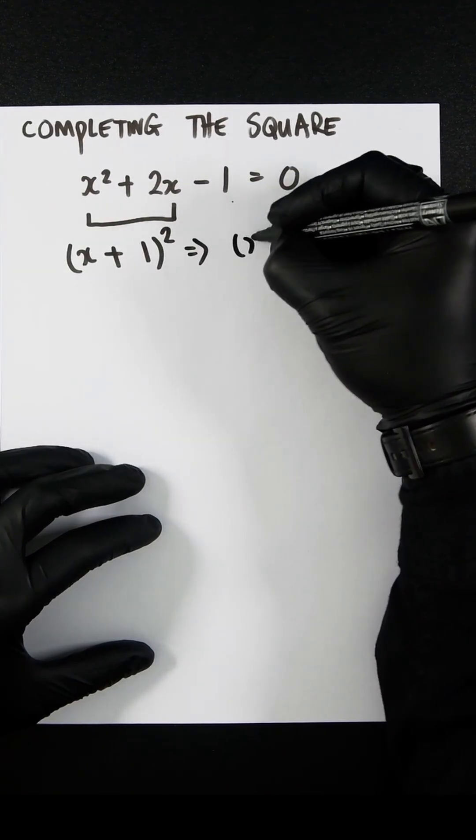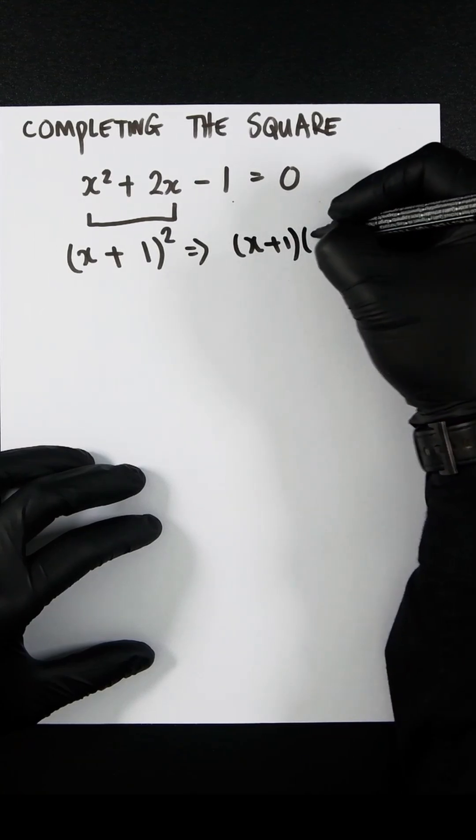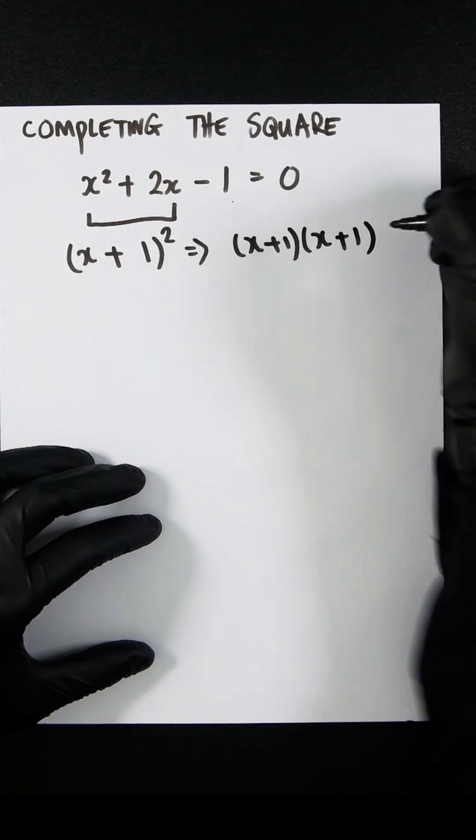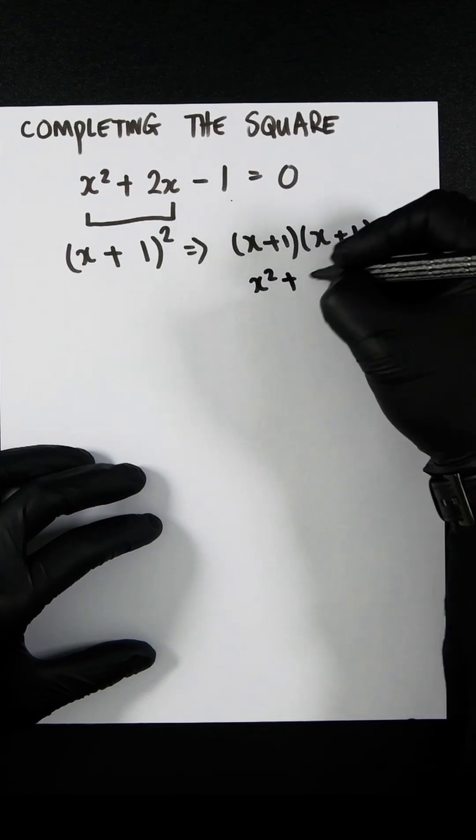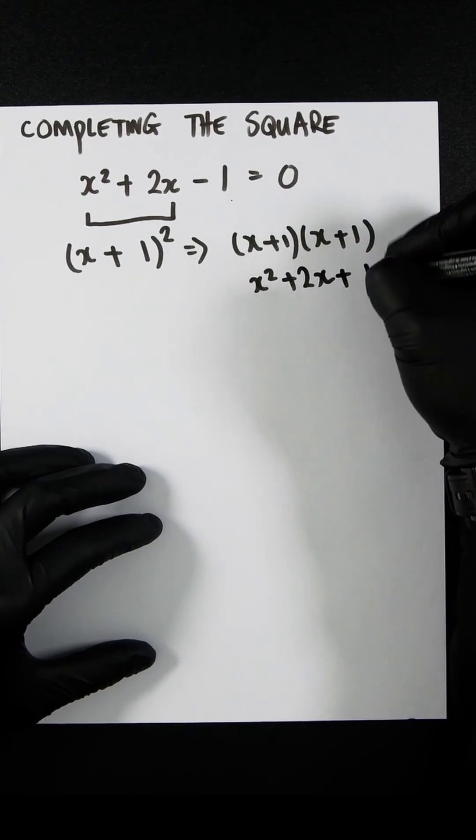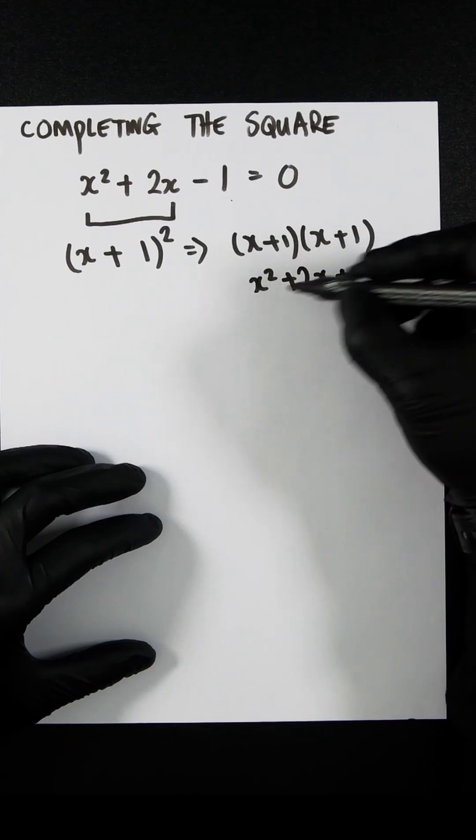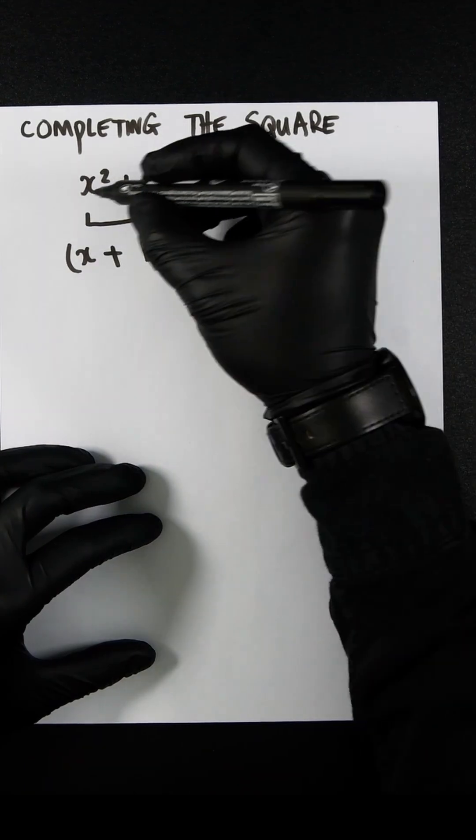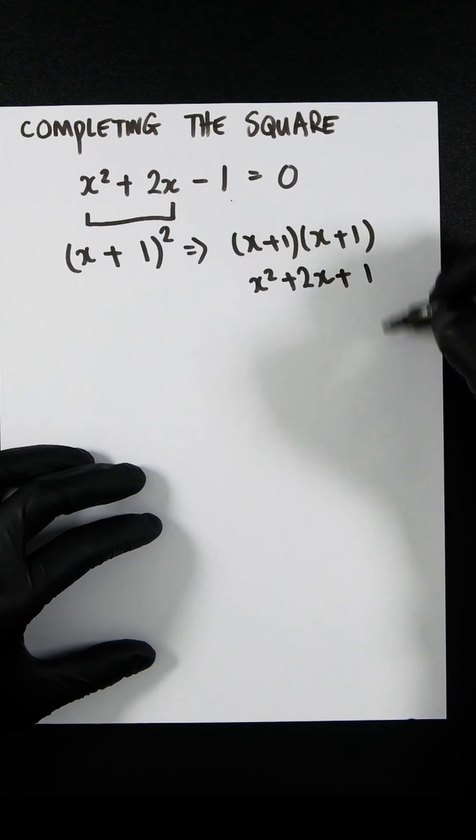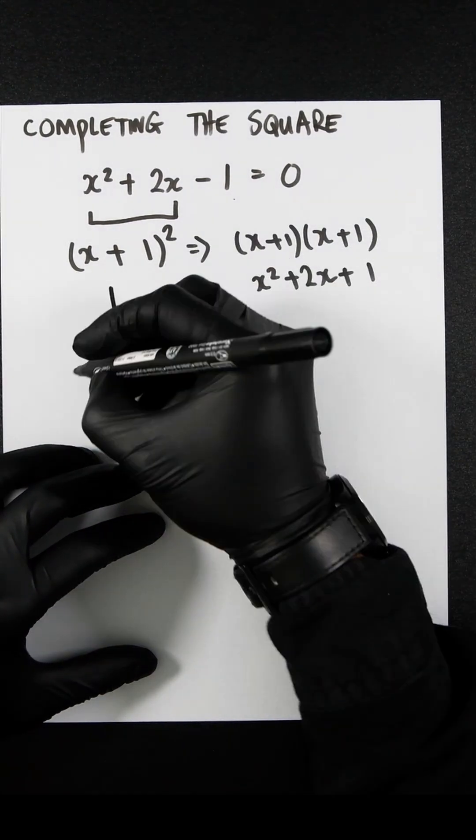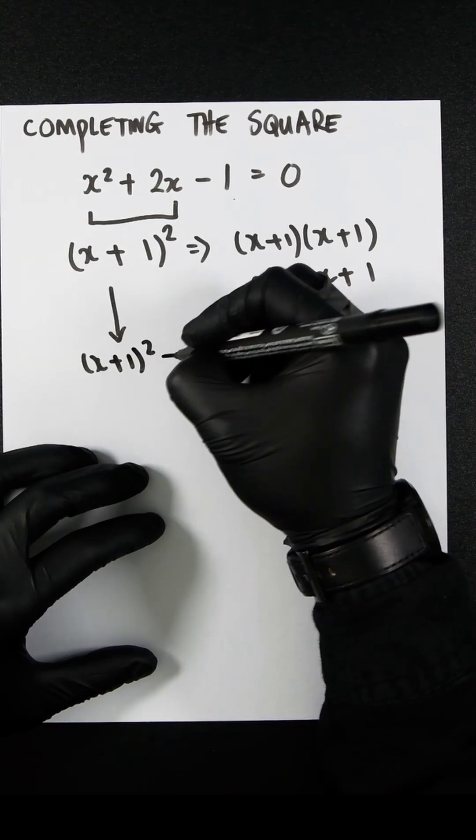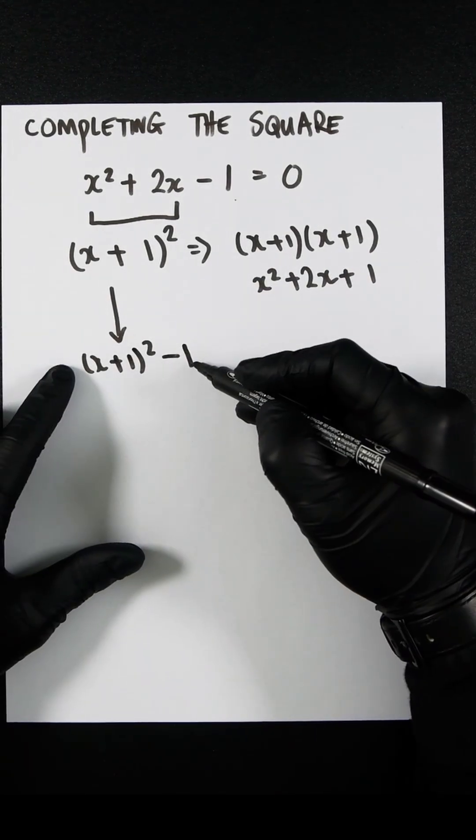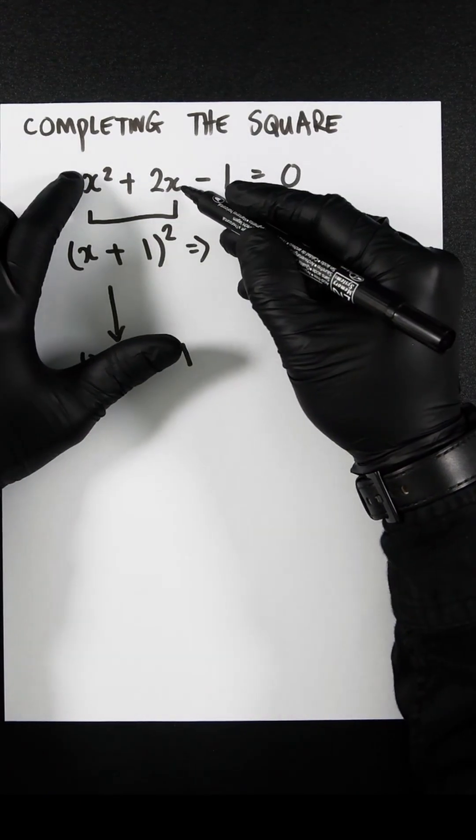So this is the same as this. And if we expand that, you're going to get x² + 2x + 1. So this is exactly the same as this, but we have an additional one. So if we write (x + 1)² - 1, this is exactly the same as this.